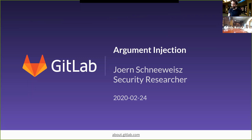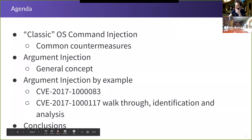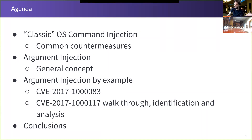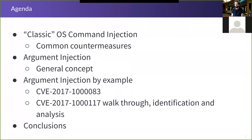Hi everyone, welcome and thank you for inviting me for this talk. I was able to freely choose my topic, so I'm trying to explain a bit about the bug class I really like, which is argument injection. On the agenda we'll have the classic command execution, OS command injection, common countermeasures, and argument injection as a follow-up. We'll look at the general concept, two examples with a walkthrough, and conclusions.